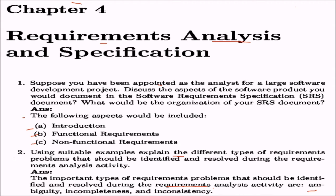Ambiguity means the requirement content should be very clear — it should clearly relate to the design, coding, and testing phases, not be ambiguous. Incompleteness means there are certain implicit things the user would not say and you might overlook. Inconsistency means the requirements should be consistent with one another — you cannot have requirements that contradict each other.